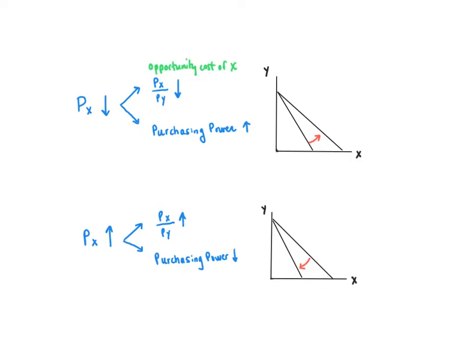When the price of X changes, both of these effects happen at the same time: the slope of the budget line changes and purchasing power changes. Both comprise what we call the total effect of a price change, which is what we observe or what actually happens. Economists use income and substitution effects to disentangle the part due to the change in the opportunity cost of X and the part due to the change in purchasing power. The impact on consumption of a change in the relative price of X in terms of Y is called the substitution effect. The impact on consumption due to a change in purchasing power is called the income effect.